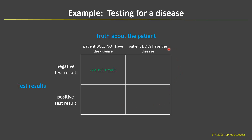If the patient does have the disease, we sure hope they get a positive test result — that would be the correct result. What about when the patient does not have the disease, but the lab results come back positive saying that the patient does? That would be what we call a false positive, and that's a type 1 error. And if the patient does have the disease but gets a negative test result, we'd call that a false negative, and that's a type 2 error.